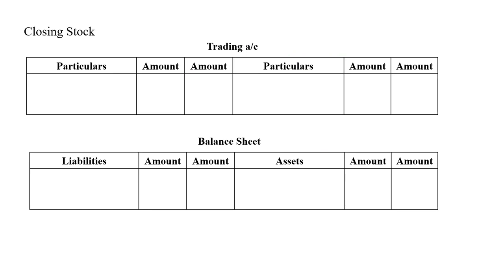The first adjustment is closing stock. Closing stock is a very important adjustment and appears in almost all problems. In the question, it will be given as 'closing stock is rupees X' — for example, 20,000 rupees. How to record this: it will be shown in the trading account on the credit side by closing stock. The second effect is in the balance sheet on the asset side, where we record closing stock with the amount. Closing stock is a simple, easy adjustment and you will not get any problem without it.